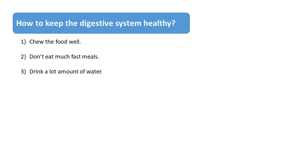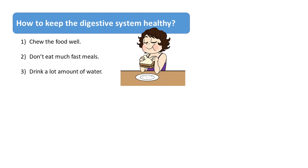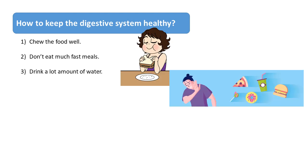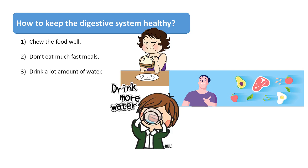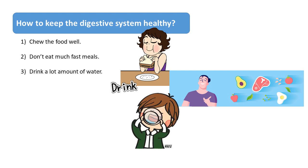So how to keep our digestive system healthy? Number one, choose food well. Two, don't eat much fast food and eat healthy food. Number three, drink a large amount of water.